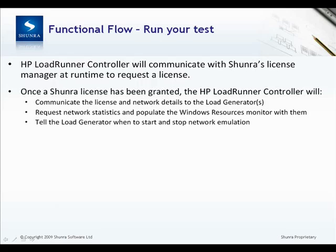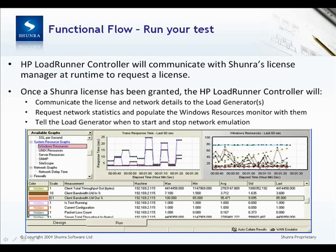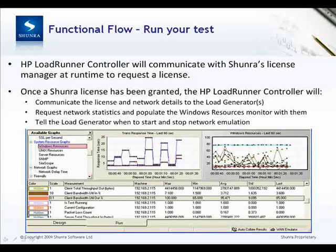The controller will then request network statistics and populate the Windows resources monitor automatically with those statistics. Then the controller will tell the load generator when to start and stop the network emulation. Shown here is a picture of a typical Windows resources graph during a LoadRunner test.